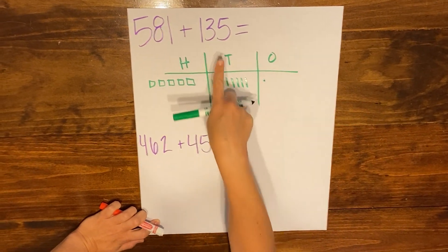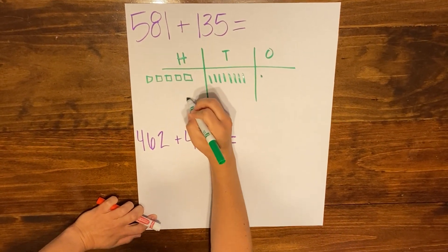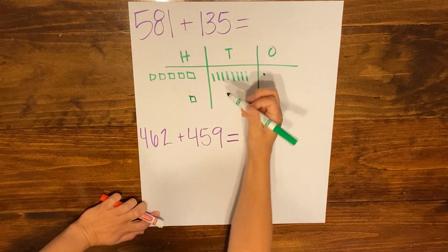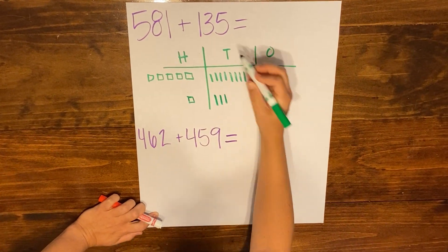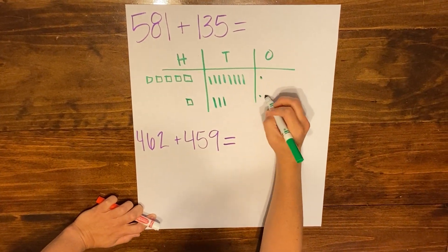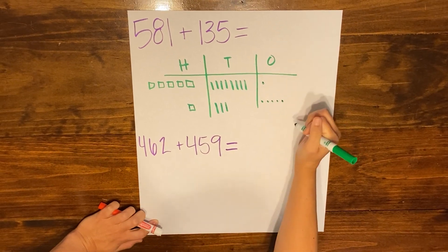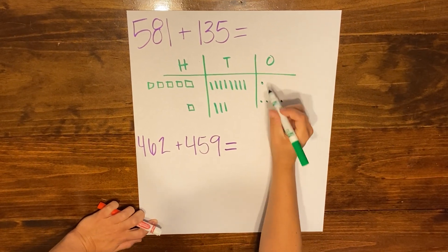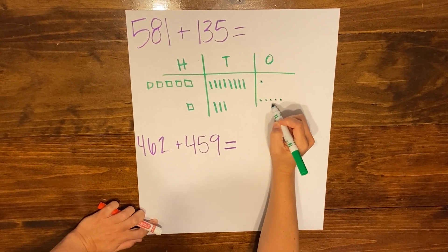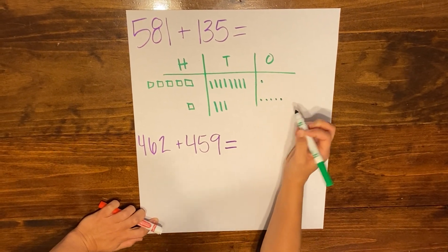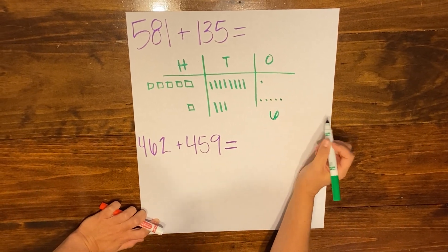Then I'm going to draw my second addend, which is one hundred, three tens, and five ones. Again, I'm going to start in my ones column: 1, 2, 3, 4, 5, 6 — so I have six ones.